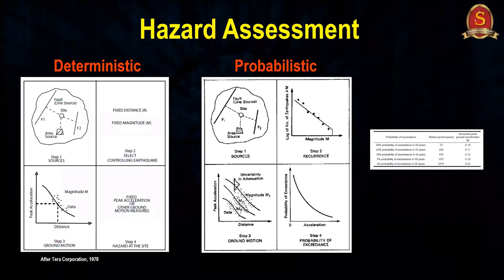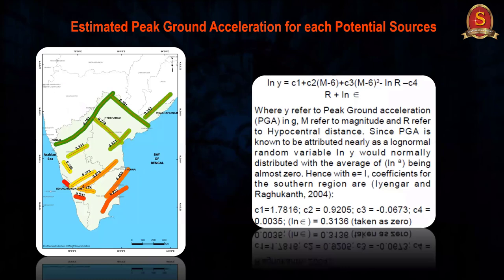As a district authority or collector, when approving a new smart city area or major installation, you need to check whether that area is prone to earthquake and what magnitude effect may occur. Based on deterministic or probabilistic assessment, the key output is Peak Ground Acceleration (PGA) — how much energy will be disseminated from a particular fault — which forms the basis for seismic zonation maps.